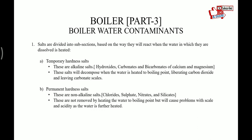Salts are divided into subsections based on the way they react when the water in which they are dissolved is heated. First is temporary hardness salt and the other is permanent hardness salt. Temporary hardness salts are alkaline salts — hydroxide, carbonate, and bicarbonate of calcium and magnesium. These salts will decompose when water is heated to boiling point and liberate carbon dioxide, leaving carbonate scales. Permanent hardness salts are non-alkaline salts: chloride, sulphate, nitrates, and silicates. These are not removed by heating the water to boiling point but will cause problems with scale and acidity as the water is further heated.